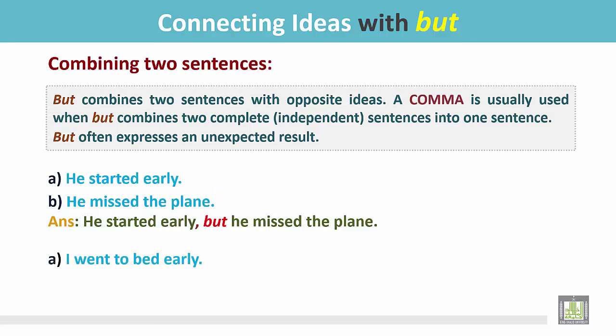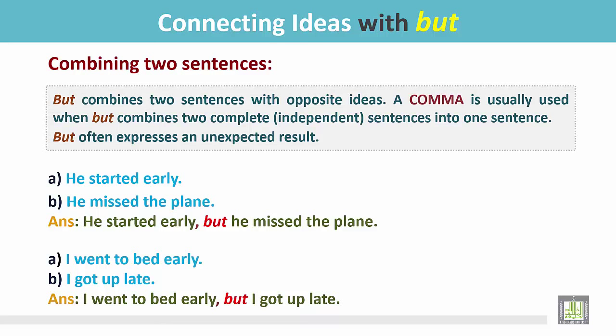Another example: 'I went to bed early. I got up late.' Since I went to bed early, I should have got up early, but I couldn't. Since these two sentences express opposite ideas and the result is unexpected, we join with 'but': 'I went to bed early, but I got up late.'